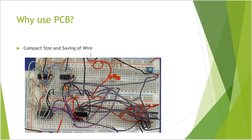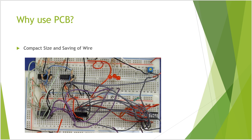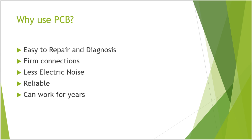Getting to the point of why we use PCB: it is compact in size and saves wiring. If you compare both pictures — the clean PCB on the right and the jumbled wire circuit — you can see quite a difference. That jumbled mess is what normal circuits look like, which is why we use PCB. Additionally, it is easy to repair and diagnose. It has firm connections because every component is solidly soldered on. It also has less electrical noise, is reliable, and can work for years.